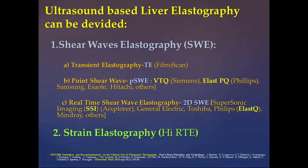Looking at shear wave elastography, we have three main groups. First is transient elastography. Second is point shear wave elastography — first was VTQ, then later ELASPQ, and now many major companies have this inside their systems. Third is real-time shear wave elastography, so-called 2D or 3D shear wave elastography.